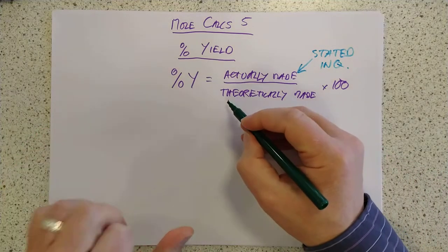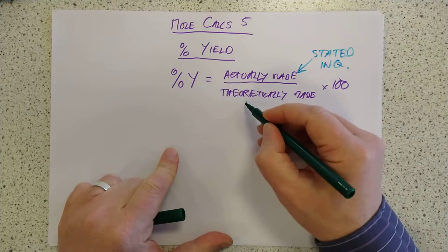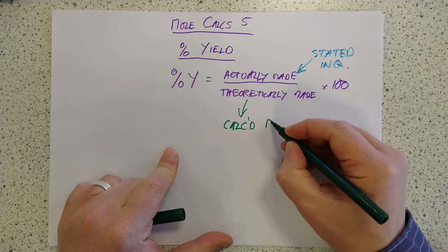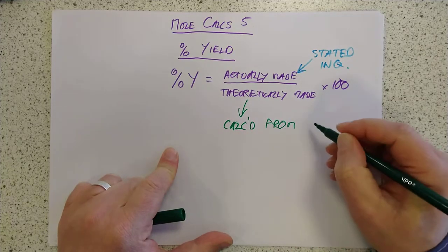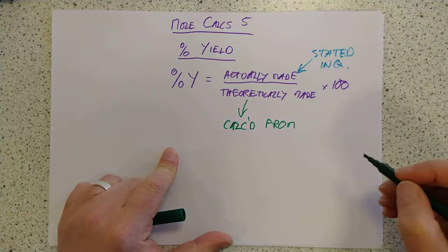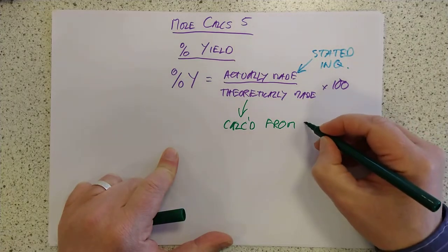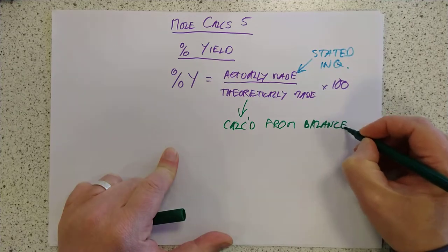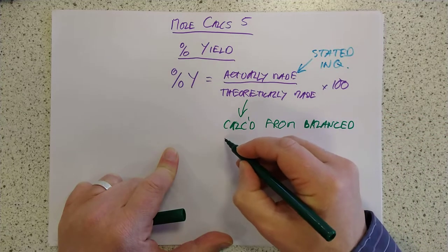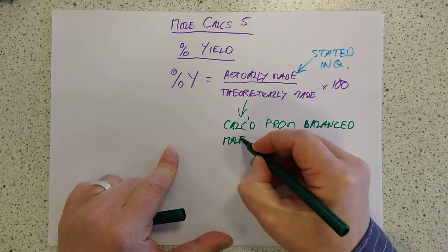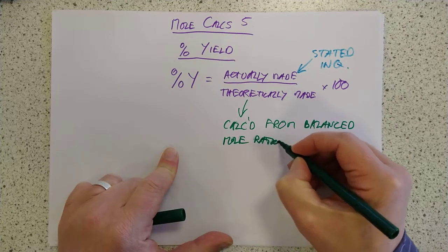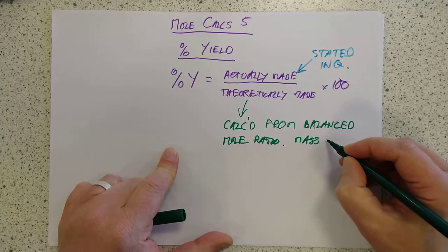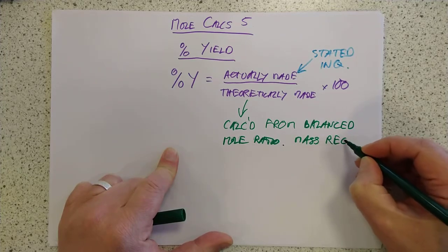The actually made mass will be stated in the question unless they're asking you to calculate it. The theoretical mass you have to work out. This is calculated from the balanced equation based on the mass of your reactant you started with using mole ratio.